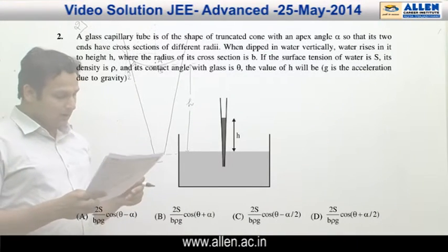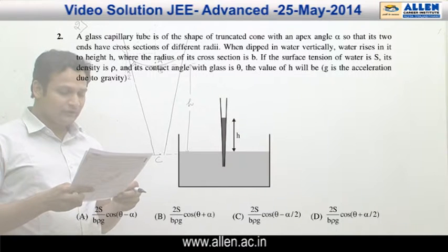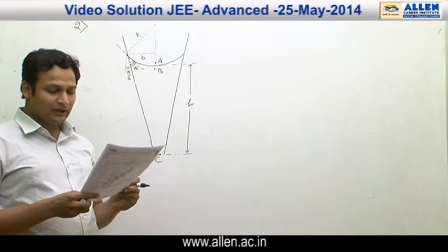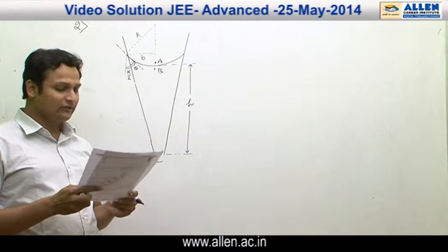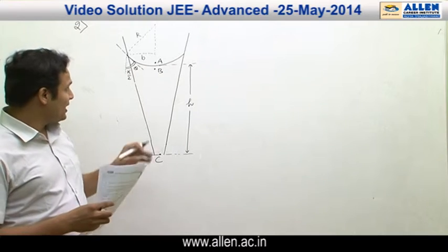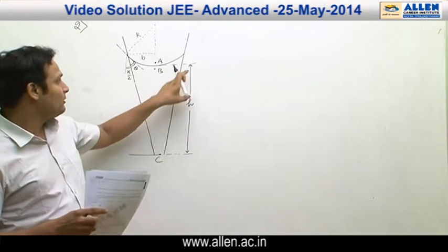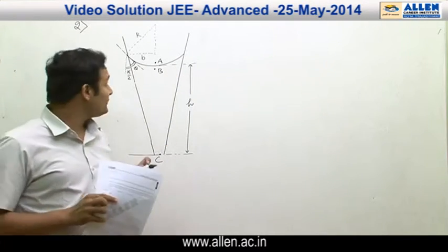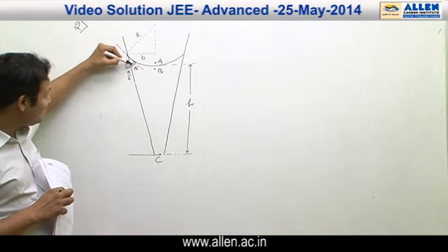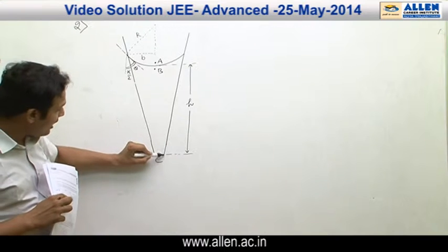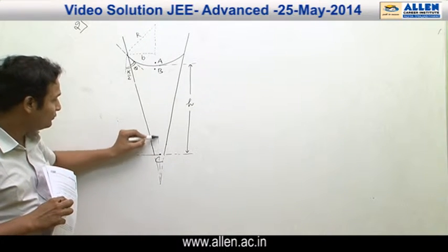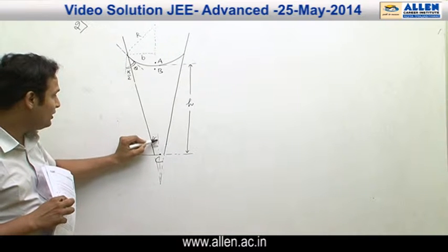Question number two: a glass capillary tube is of the shape of a truncated cone with apex angle alpha, so that its two ends have cross-sections of different radii. We have a glass tube in conical shape and liquid has risen up by height h. The contact angle is theta, and the half-angle of the cone is alpha by 2.